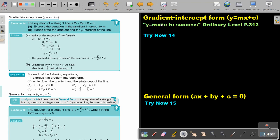In this video, we are going to focus on the gradient-intercept form of a straight line or the general form of a straight line. You will find this on page 312 in the Namibia Ordinary Level Mathematics textbook y equals mx plus c to success.